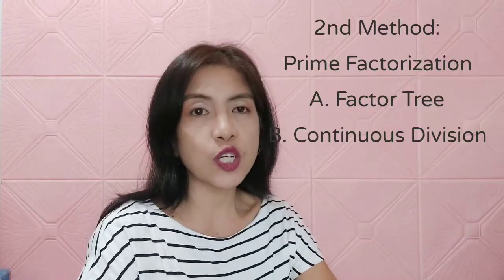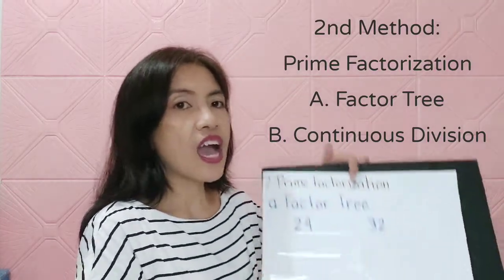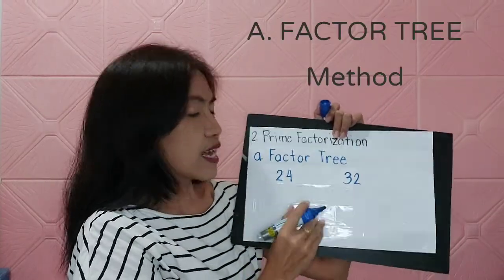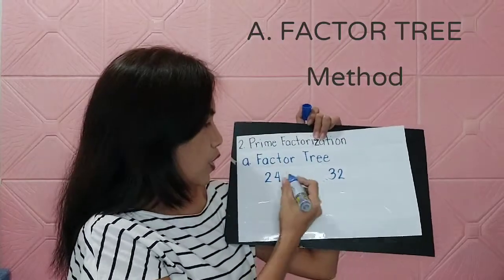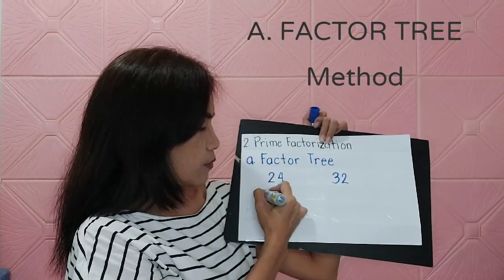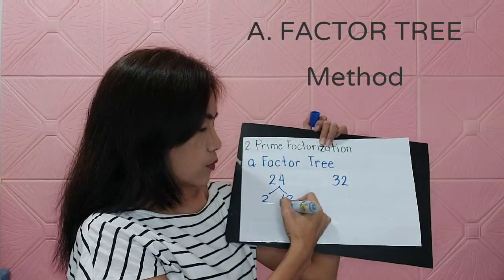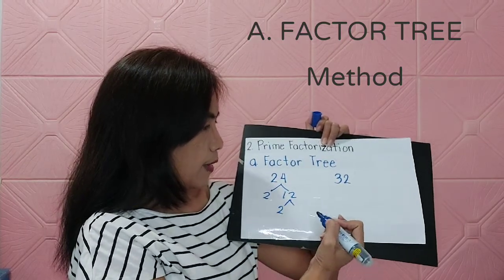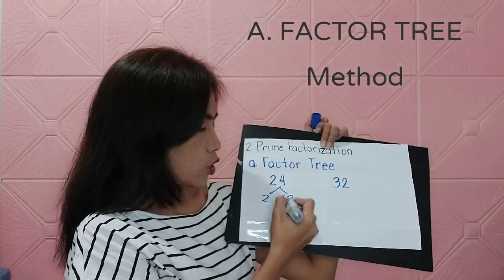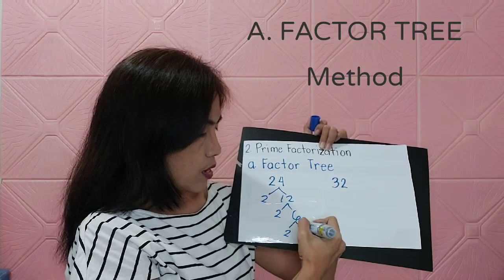Next, getting the prime factorization — we can use the factor tree method. For 24, we factor it starting with 2: 24 = 2 × 12, then 12 = 2 × 6, and 6 = 2 × 3.